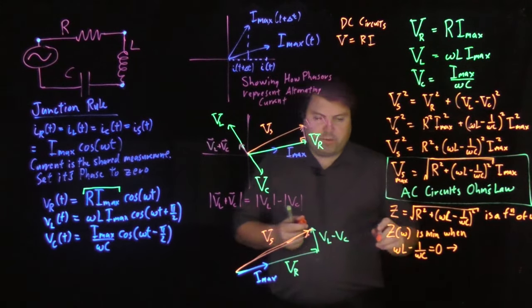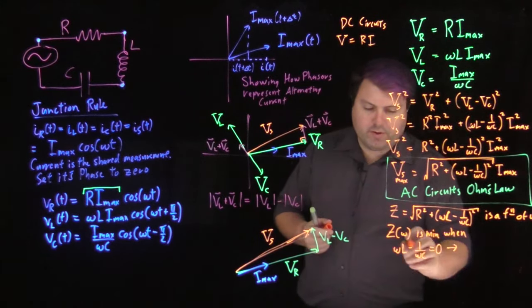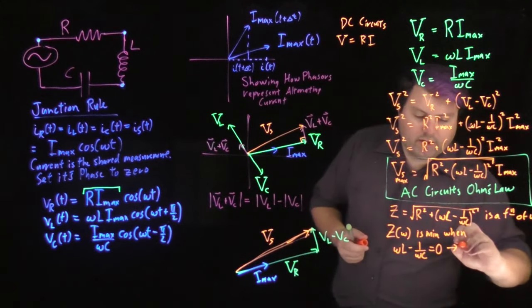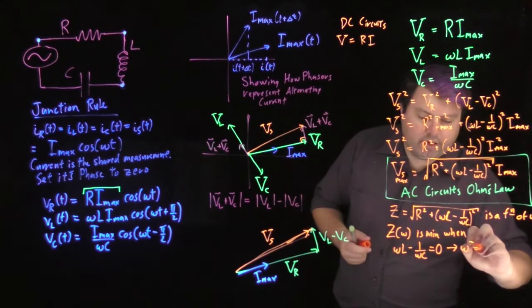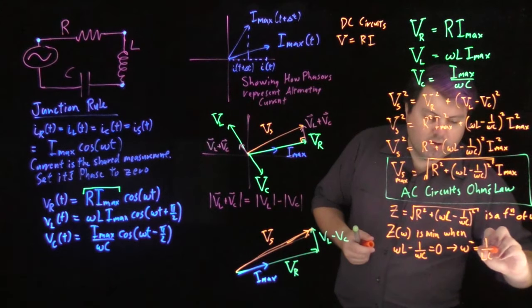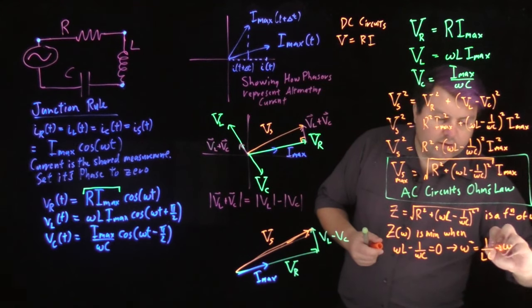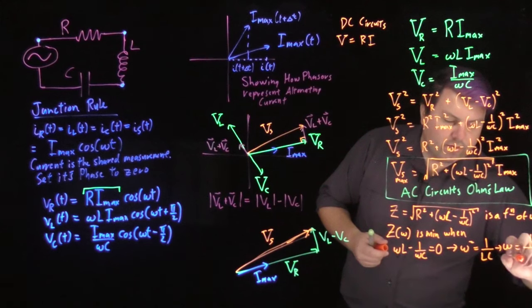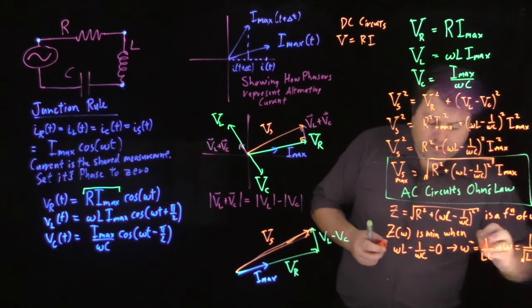So just a little bit of math, bring this omega C over, multiply both sides by omega, divide by L, we get then that omega squared equals 1 over LC, or we get that when omega is equal to 1 over the square root of LC.